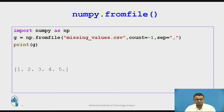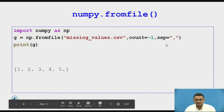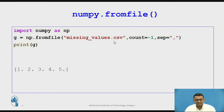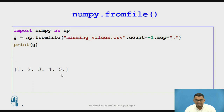Now let us see how to use the fromfile routine. The fromfile routine takes the name of the file, count as -1, and separator as a comma. Since this is a CSV file, we use the comma separator. Count set to -1 specifies that we read all the data from the file. Once we print the array, we get the data as shown in the output. This is how we use the fromfile routine.